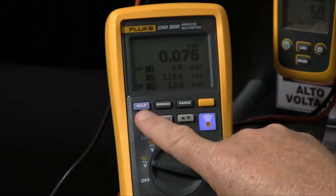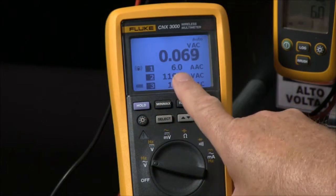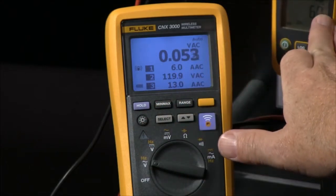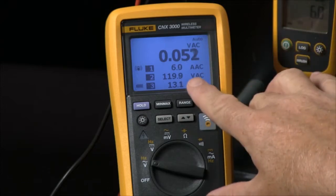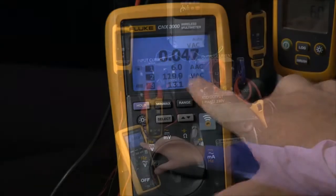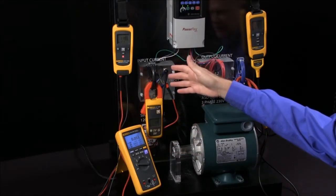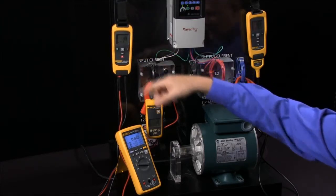So here we can see we have six amps that is coming in to the input of the drive. We have 119.9 volts that's been measured at the input going into the drive.